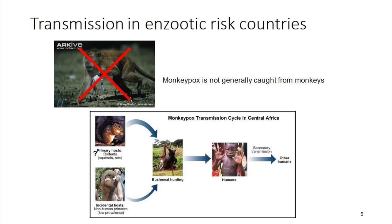In the enzootic risk countries in Africa, the first thing to say is that the monkeypox name is a bit of a misnomer. Monkeys do get infected and there is some human interaction — for example, one ethnic group we work with in Central African Republic, the Aka tribe, do hunt monkeys and sometimes report that the monkeys they kill for food have lesions typical of monkeypox on their face. However, rodents are the main reservoir.